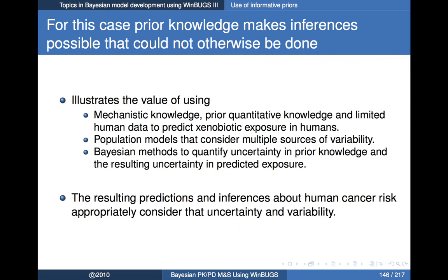The key point here is that prior knowledge makes inferences possible that couldn't otherwise be done. It illustrated the value of combining mechanistic knowledge, prior quantitative knowledge, and very limited human data to predict chemical exposure in humans. Population models considered multiple sources of variability, and Bayesian methods quantified uncertainty in both the prior knowledge and the predicted quantities. Predictions and inferences about cancer risk then appropriately considered that uncertainty and variability.